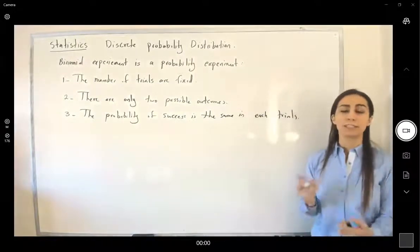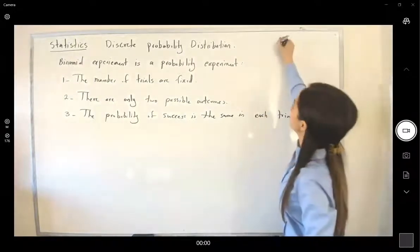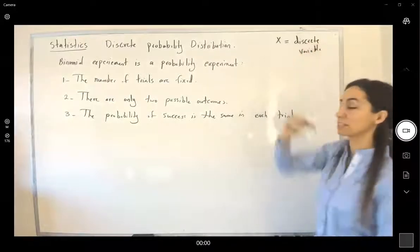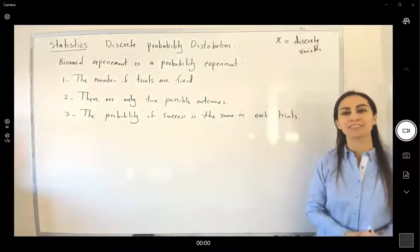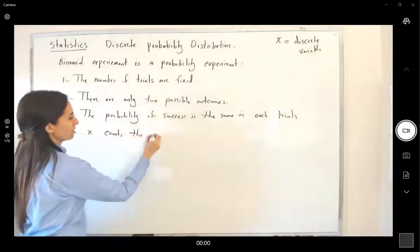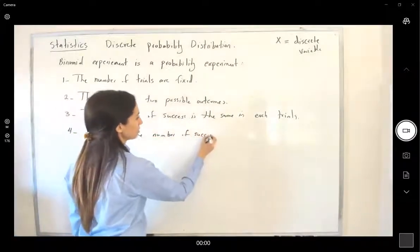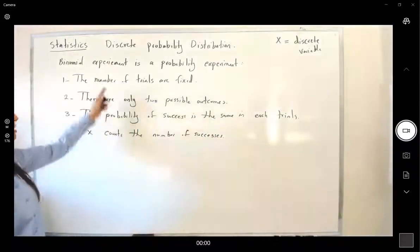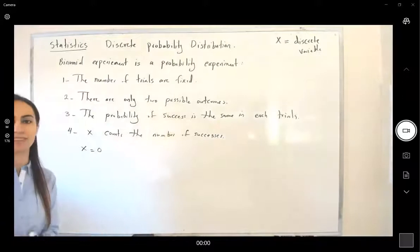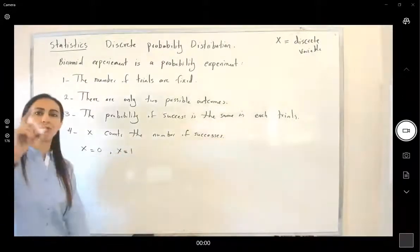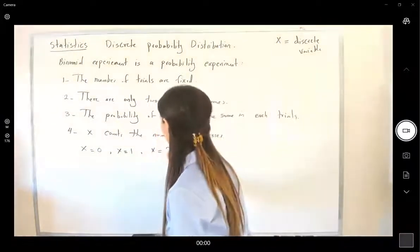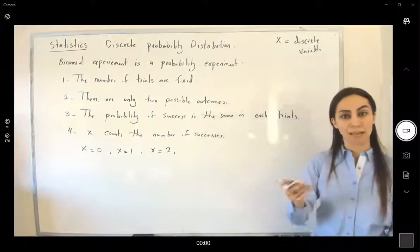Now you might ask: what's the role of x? X is a discrete variable. The discrete variable x counts the number of successes in this experiment. When you have this probability experiment, you might have no success, so x might be equal to zero. Or just one success, or two successes, or three successes — x counts the number of successes.